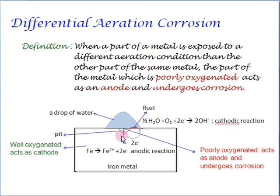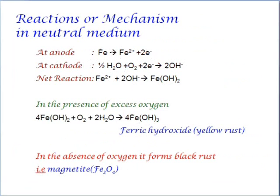Now, first, let us look into the reactions and the mechanism and come back to this diagram to see where and why rust is formed here. Let us look into the reactions and the mechanism, especially in a neutral medium because if it is an acidic medium, the reactions are going to be different.